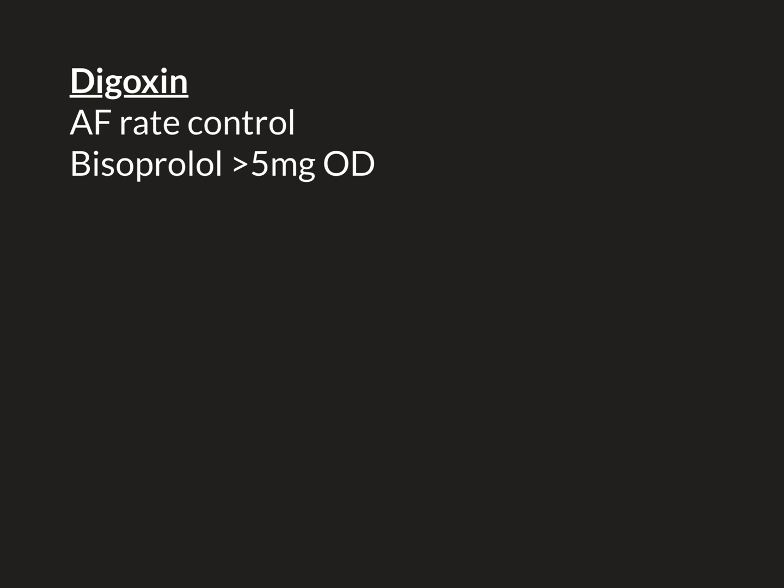We could raise the dose of bisoprolol further, but in a frail little old lady, 5 mg is a very good dose, and it's questionable whether raising it further is going to produce any further effect — 5 mg should be turning down the sympathetic stimulation to the heart quite considerably. So in this case, we would add in digoxin as an adjunctive treatment: she'd stay on bisoprolol 5 mg once daily, and we'd add digoxin as a second agent to rate control her AF.